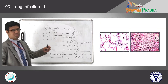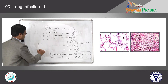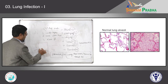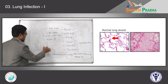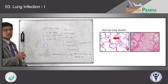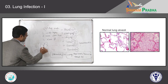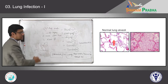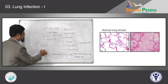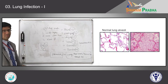You can see there are two pictures. On your left side you have normal lung alveoli — a thin inter-alveolar septum and alveoli with clear lumen. Sometimes you can see occasional alveolar macrophages, the third line of defense. This is the normal.